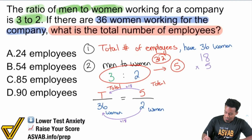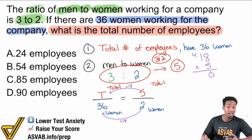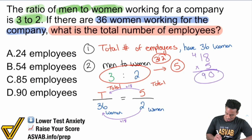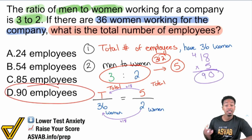18 times 5: 8 times 5 is 40, 1 times 5 is 5, plus 4 is 9 — so 90. The answer is 90. The total number of employees is D: 90.